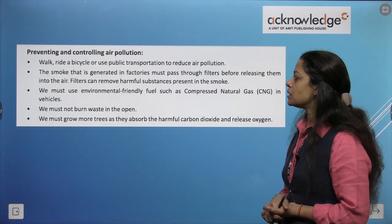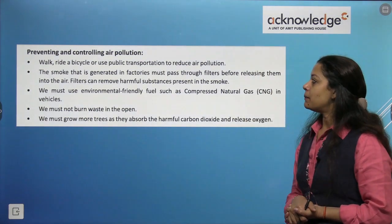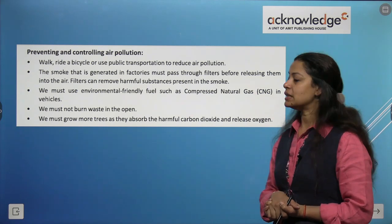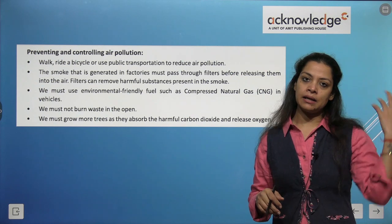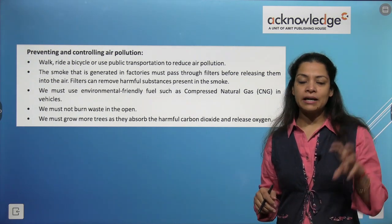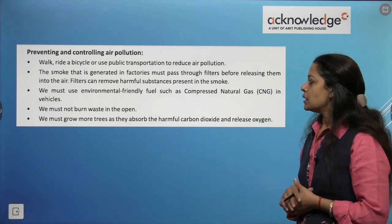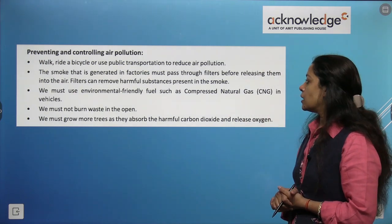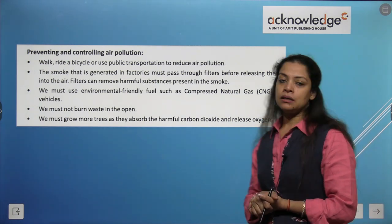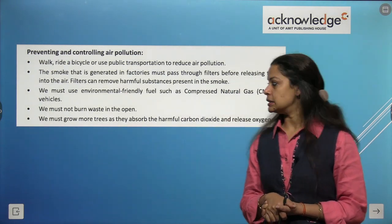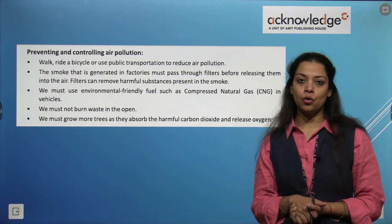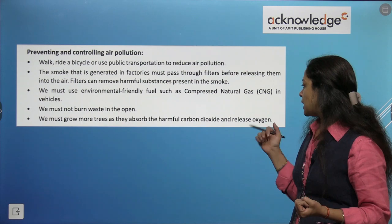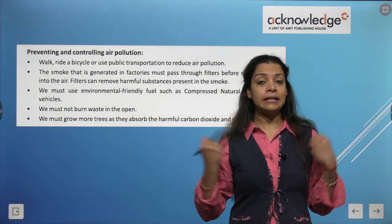Preventing and controlling air pollution: walk, ride a bicycle or use public transportation to reduce air pollution. Smoke from factories must pass through filters before being released into the air to remove harmful substances. We must use environmental fuels such as Compressed Natural Gas (CNG) instead of petrol and diesel. We must not burn waste in open areas, and we must grow more trees so they can absorb harmful gases, especially carbon dioxide, and release more oxygen.